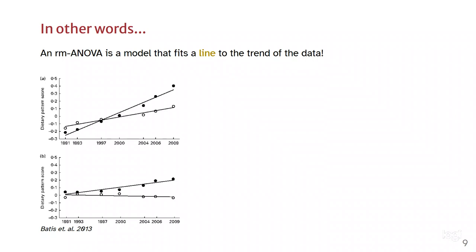In this graph I have here from a paper, you see that the trend of the data is fairly linear. So a linear mixed model, or a repeated measures ANOVA, is going to do a good job capturing the trend of the data and giving you reliable inference.